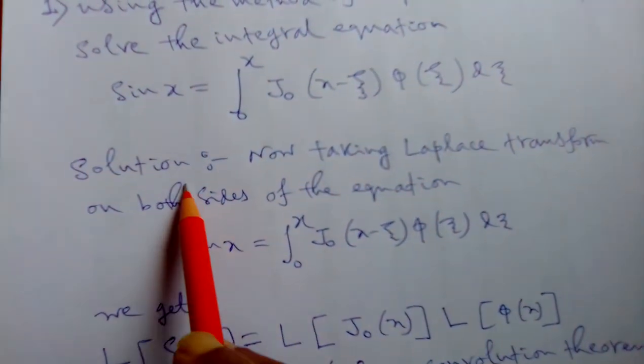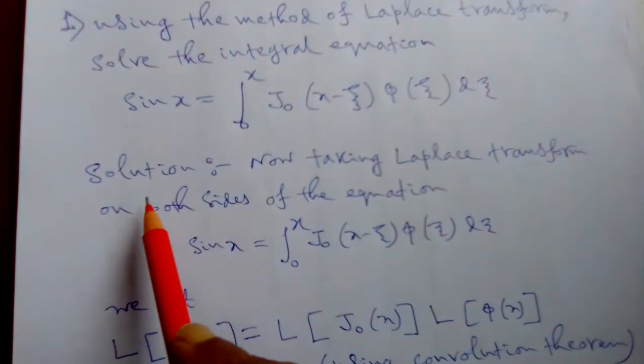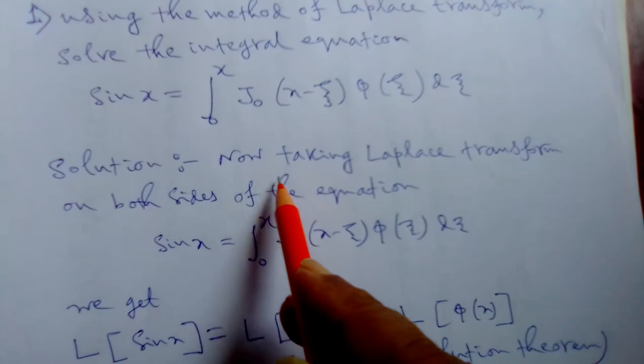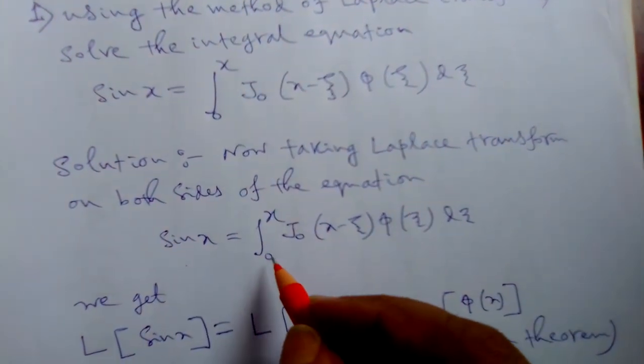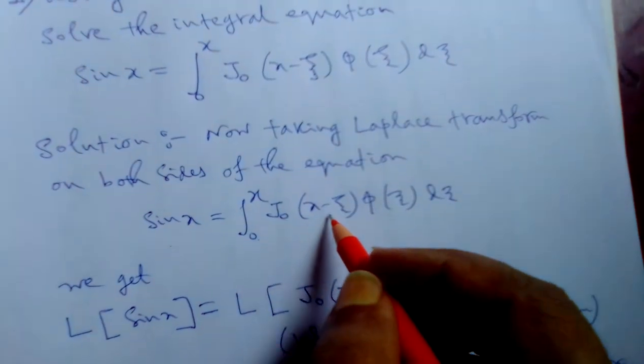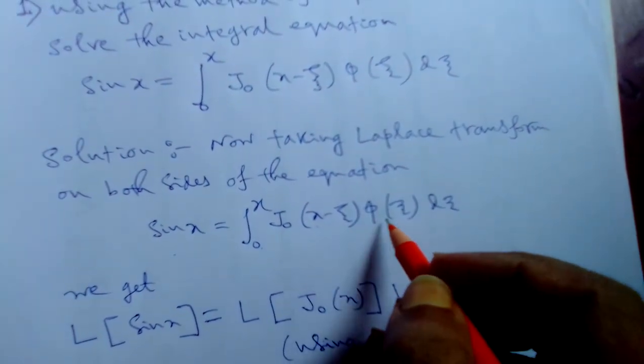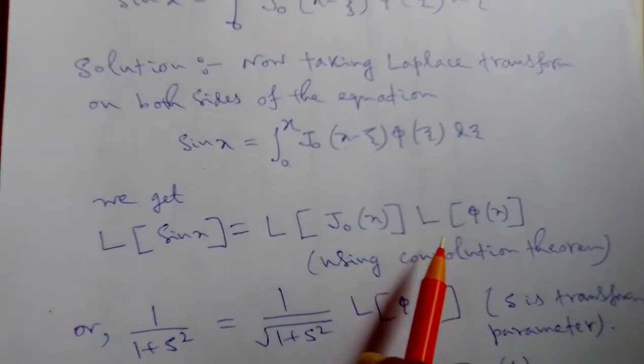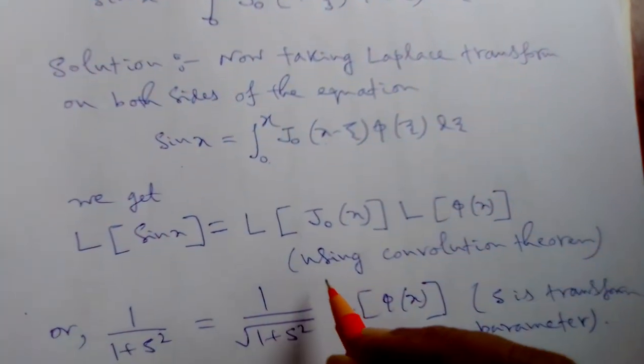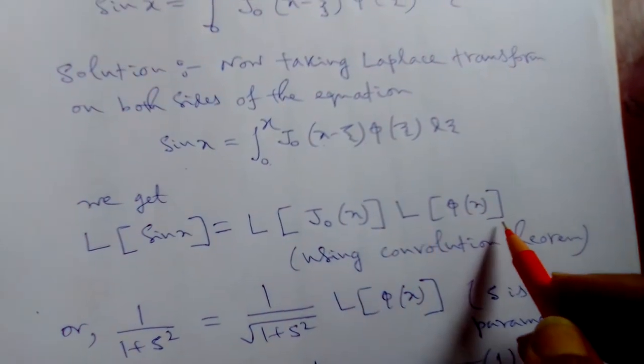Now, come to the solution part. For the part of solution, now taking the Laplace transform on both sides of this equation sin x equals integral 0 to x j0(x minus xi) phi(xi) d xi. Clearly taking the Laplace transform on both sides of this equation, and now this is a part of convolution theorem.